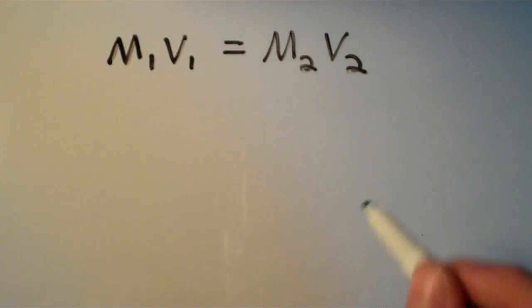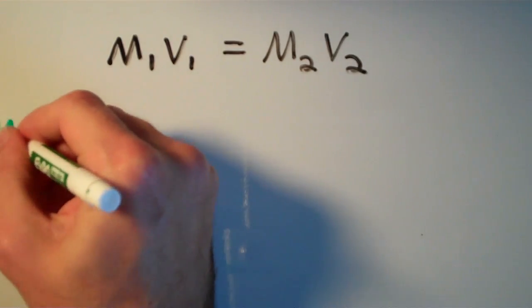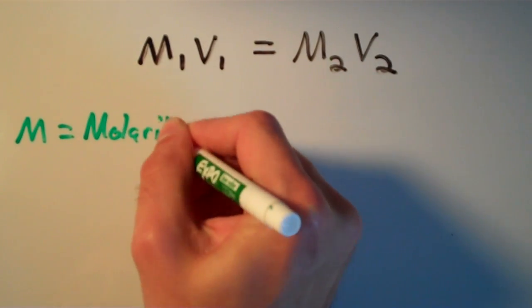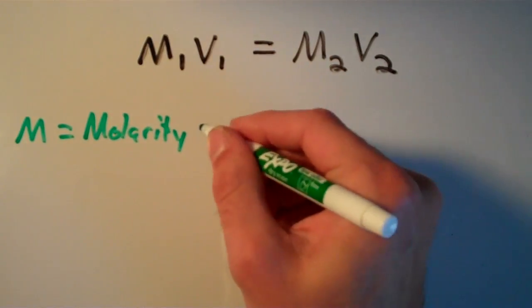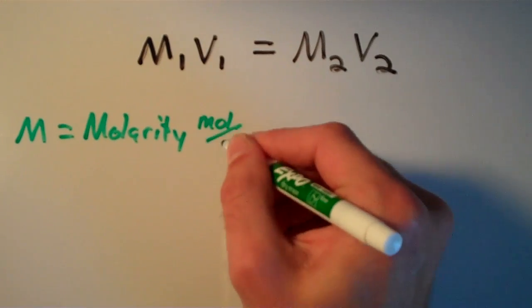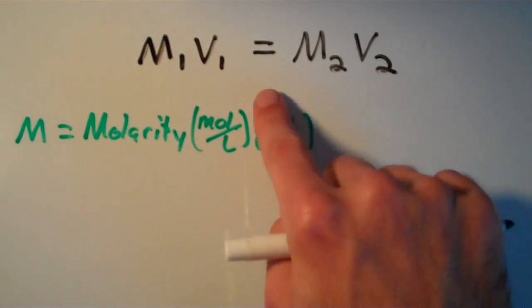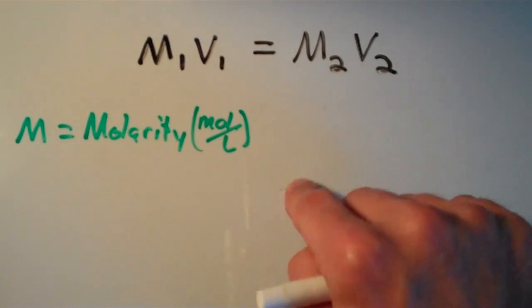So what M and V stand for, let's write it down. M is the molarity, and remember that is in moles per liter or simply molar. So not moles per liter times molar, moles per liter or molar.